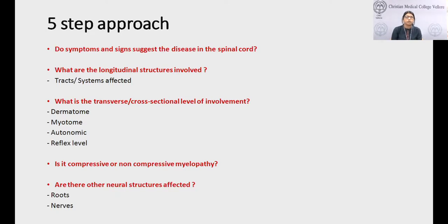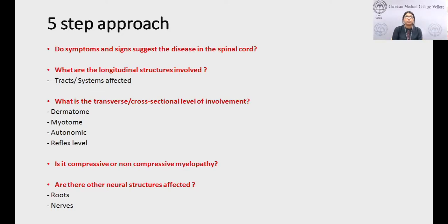We must determine which longitudinal structures are involved — that is, the ascending and descending tracts — and what systems are affected. We also need to establish the transverse or cross-sectional level of involvement: the sensory level, motor level, autonomic level, and reflex level. Finally, we must determine whether the myelopathy is compressive or non-compressive, and whether other neural structures such as roots and nerves are affected along with the cord.